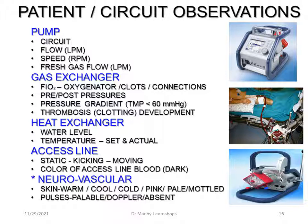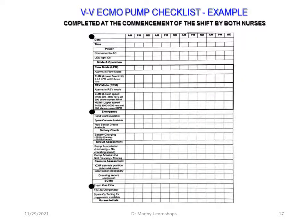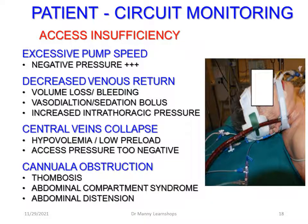Neurovascular assessment includes checking for warm, pink skin and palpable pulses — cold, pale, or mottled skin is not good. A shift checklist example is typically completed at the commencement of the shift by both nurses, covering patient circuit monitoring parameters.